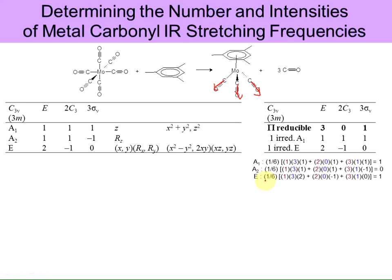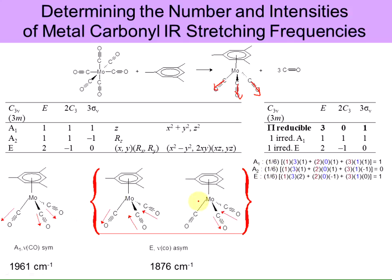The A1 represents one stretch occurring at 1961 wave numbers — this is the symmetric stretch where all COs stretch in the same direction. The E means there are two degenerate stretches. One E mode has one CO stretching while the other two contract; the other E mode has one CO staying the same while the other two are in opposite phase. Both occur at 1876 wave numbers. So we still have three modes of vibration, but two are degenerate — that's why we see two peaks in the IR for the CO stretches.